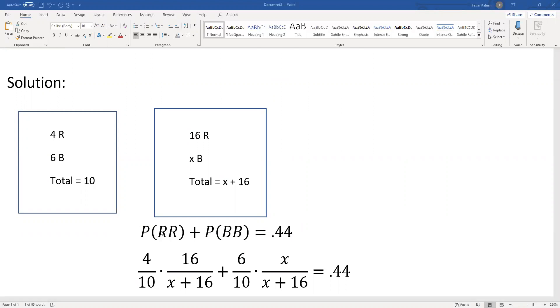And probability red and red: the first one red would be 4 out of 10, and the second one red would be 16 out of x plus 16. So 4 out of 10 times 16 out of x plus 16. Remember, and means multiplication, or means addition.